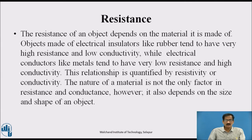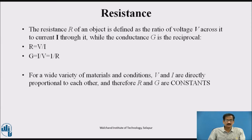Electrical conductors like metals tend to have very low resistance and high conductivity. This relationship is quantified by resistivity or conductivity. The nature of material is not the only factor in resistance and conductance; it also depends on the size and shape of an object. The resistance R of an object is defined as the ratio of voltage V across it to current I through it, while conductance G is the reciprocal of resistance. So R = V/I, and conductance G = I/V or I/R.